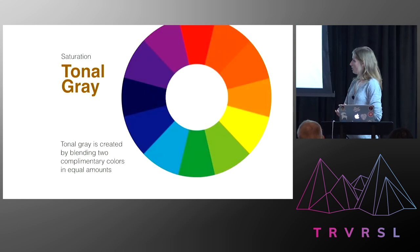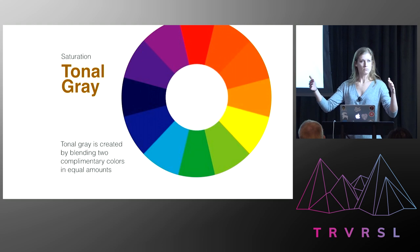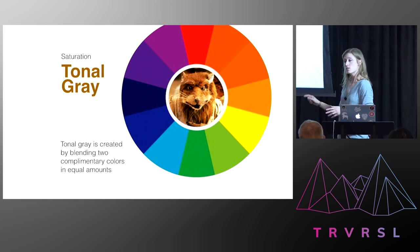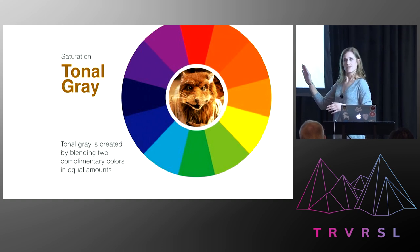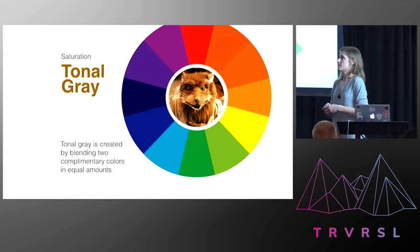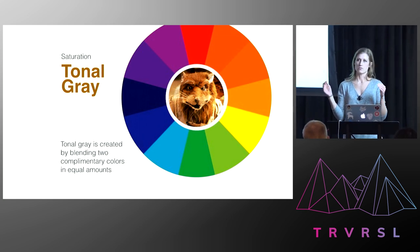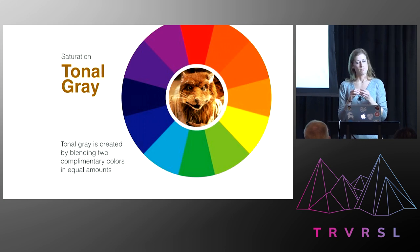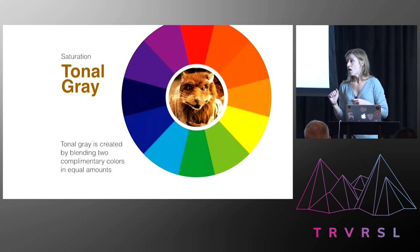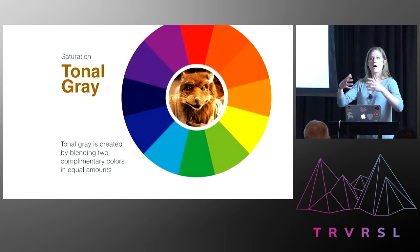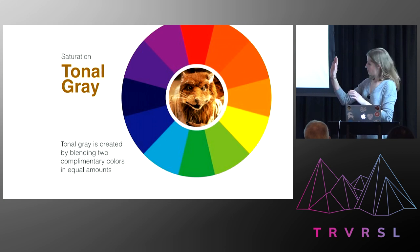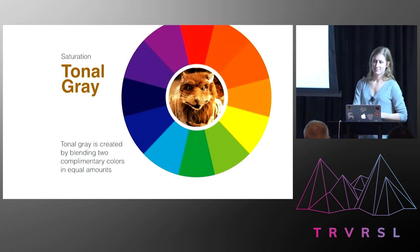When you talk about tonal gray — made by combining two colors opposite each other on the color wheel in equal amounts — we have Splinter. Splinter is the tonal gray of the turtles. He's basically made by combining all of his students in equal amounts — he's raised these ninjas since they were just little tiny radioactive babies, and you see parts of him in all of his students, but he is neutral, very calm, very centered. Splinter is the tonal gray of the turtles.